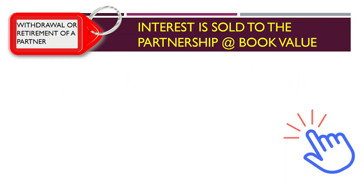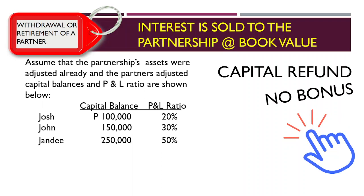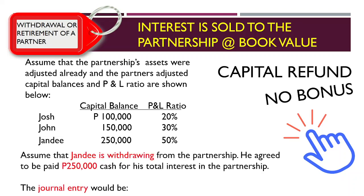Case number one: the interest is sold to the partnership at book value. The payment to the withdrawing partner is equal to his adjusted capital balance. Hence, this is basically a capital refund and no bonus. We have three partners named Josh, John, and Jandy, showing the capital balance of each partner and their profit and loss ratio.